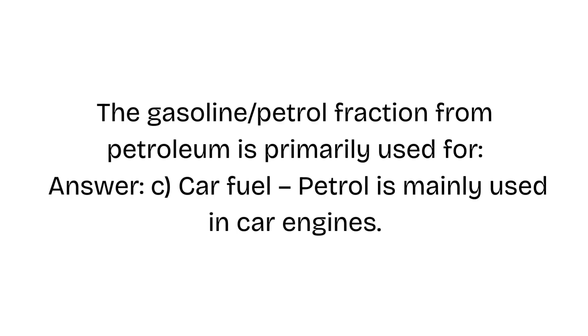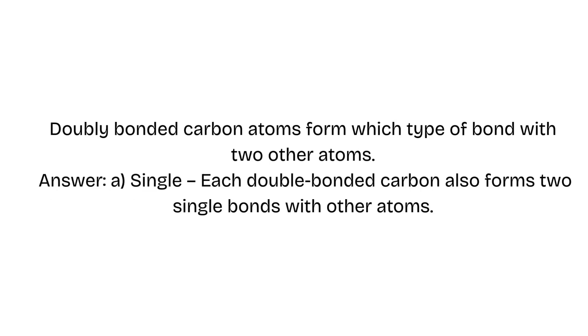Double-bonded carbons form which type of bond with two other atoms? Answer: A — Single. Each double-bonded carbon also forms two single bonds with other atoms.